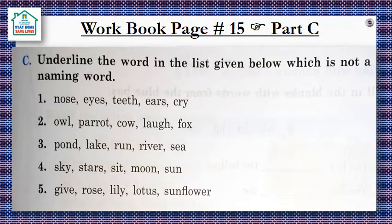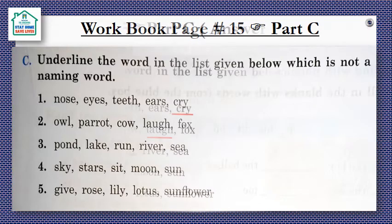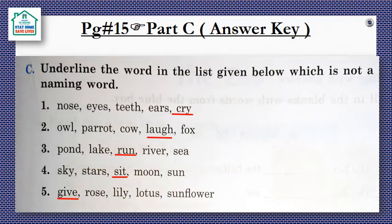Number five: the first word is give. Think about it — give is an action word. The other words are rose, lily, sunflower — these are all naming words, they are different flowers. Dear students, for your convenience, here is the answer key of part C. You may check your answers after solving it.